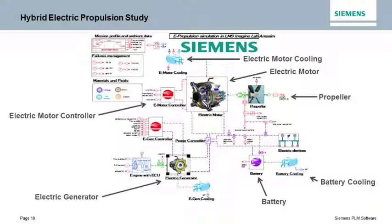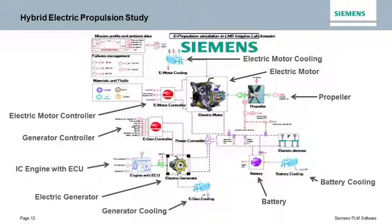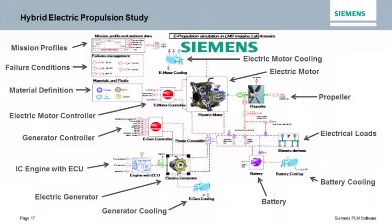The system also includes an electric generator with a generator controller and cooling system, an internal combustion engine with an engine control unit, some electrical loads, a materials definition interface, a mission profile interface, and a failure modes interface.